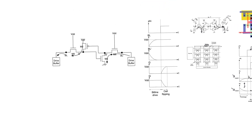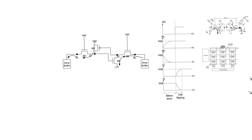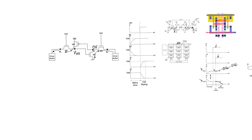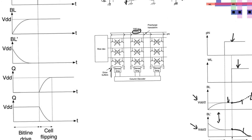Now let's look at how we write to the SRAM cell. There are two cases when writing: either we write the same data that was there — a trivial case — or we are trying to flip the state of the cell, which is the case we care about. Consider storing VDD at Q and 0V at Q bar, and we need to write new data. To do this, we drive the values we want to write using drive buffers on the bit lines. The bit lines during writing are completely different from the bit lines during reading — it's the same metal line, but completely different in terms of its impedance.